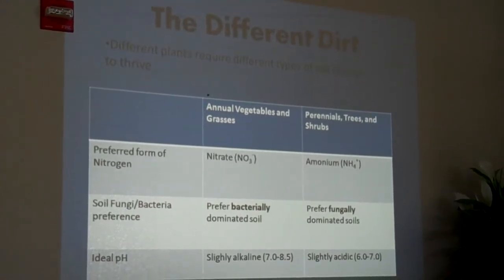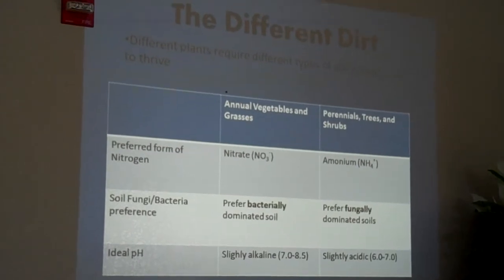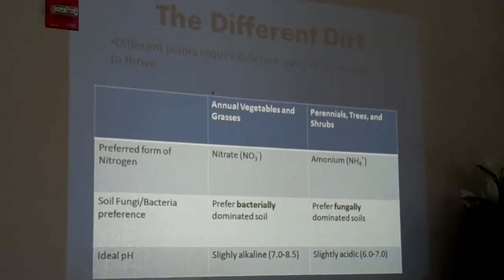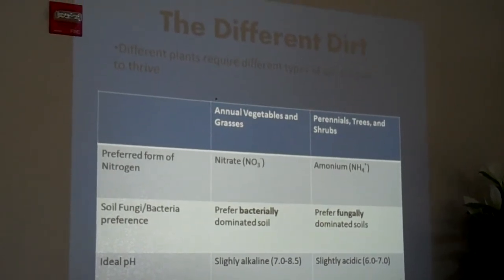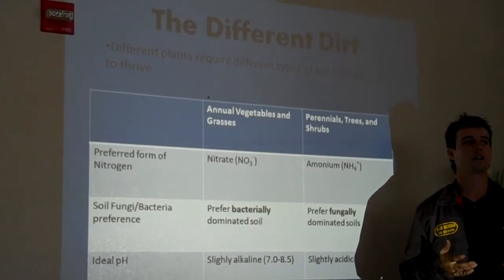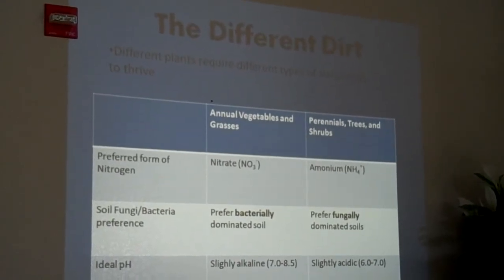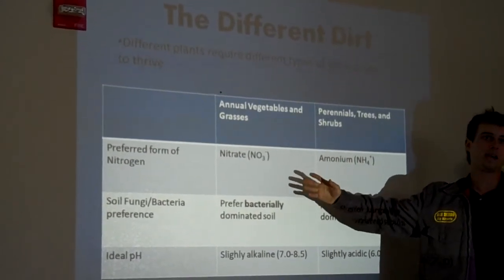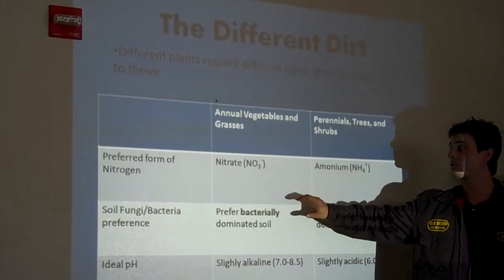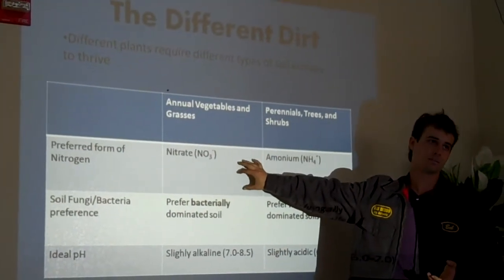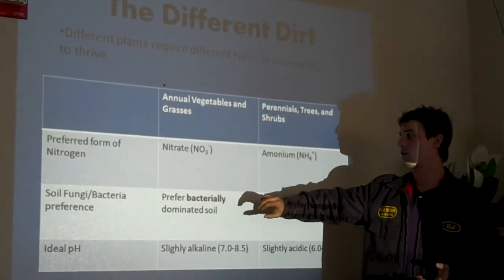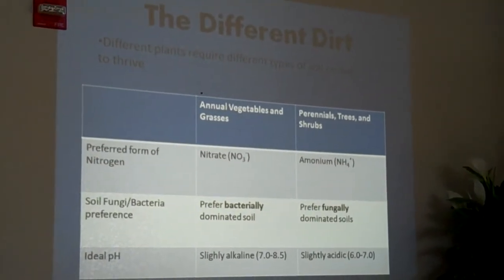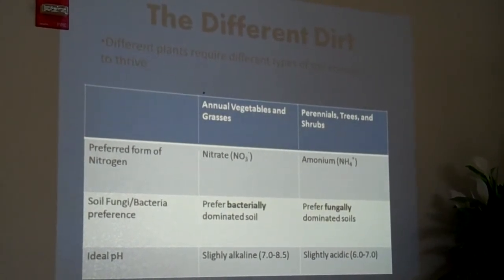A grassland soil is going to be pretty different, both on an aesthetic level — you can look at it and see differences — but also on a microbial level. If you looked at the little animals and critters moving around there, you would find different things. Annual vegetables and grasses prefer nitrogen in the form of nitrate, which is NO3. They prefer a bacterially dominated soil, usually with a ratio of about one to one as far as bacteria to fungal biomass in the soil.